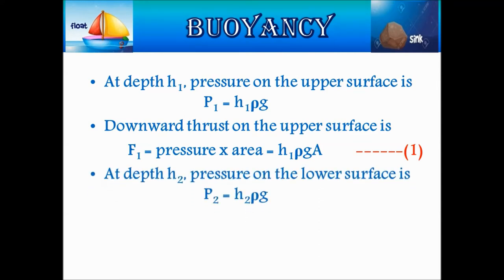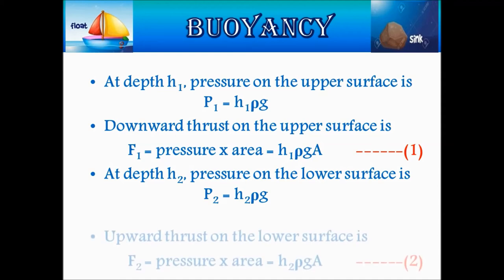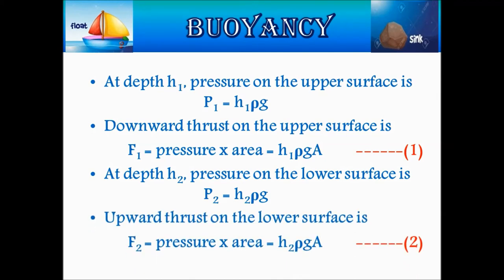At depth H2, pressure on the lower surface gives upward thrust F2 = pressure × area = H2 × Rho × G × A. Let this be equation number 2.